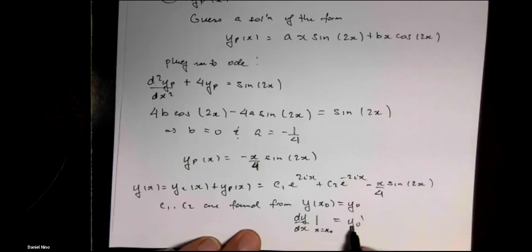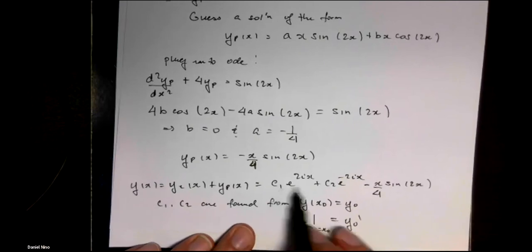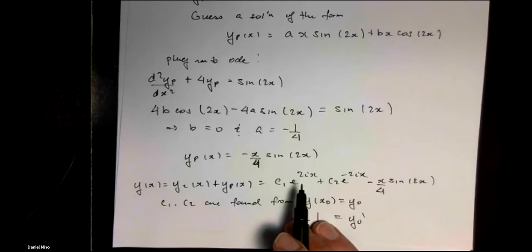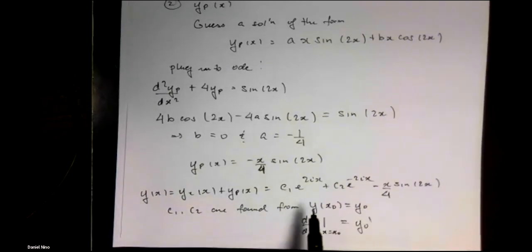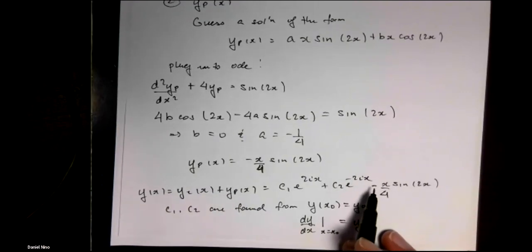If you're given these two values, you can find a specific value for C1 and C2. In the absence of this information, this gives us our general solution to this differential equation.